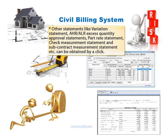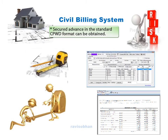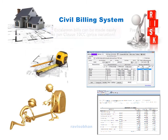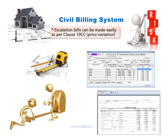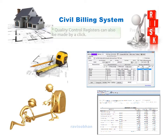Other statements like variation statement, HR, ALR, excess quantity approval statement, part rate statement, check measurement statement, and subcontract measurement statement, etc. can be obtained by a click. Secured advance in the standard CPWD format can be obtained. All deductions can be defined for effective recovery. Escalation bill can be made easily as per class 10CC price variation. Registers for daily labor and daily cement can be made by a click. Quality control registers can also be made by a click.